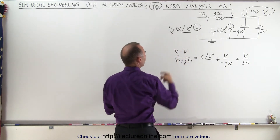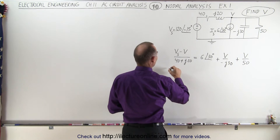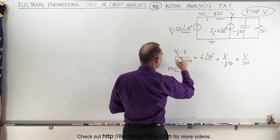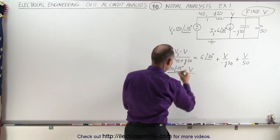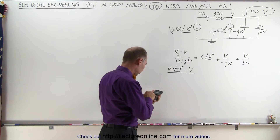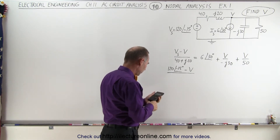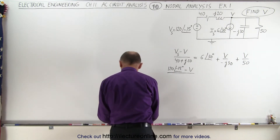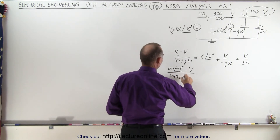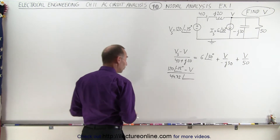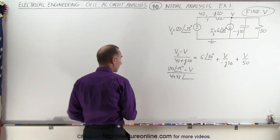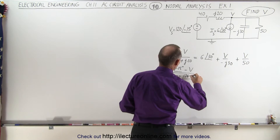Let's first replace the source voltage by 120 at an angle of minus 50 degrees. So we have 120 with a phase angle of minus 15, and minus V divided by — now let's convert that to a magnitude and phase angle. That's 2000, so take the square root of 2000, we get 44.72, with a phase angle — 20 divided by 40 is 0.5, so the inverse tangent of 0.5 is 26.57 degrees.